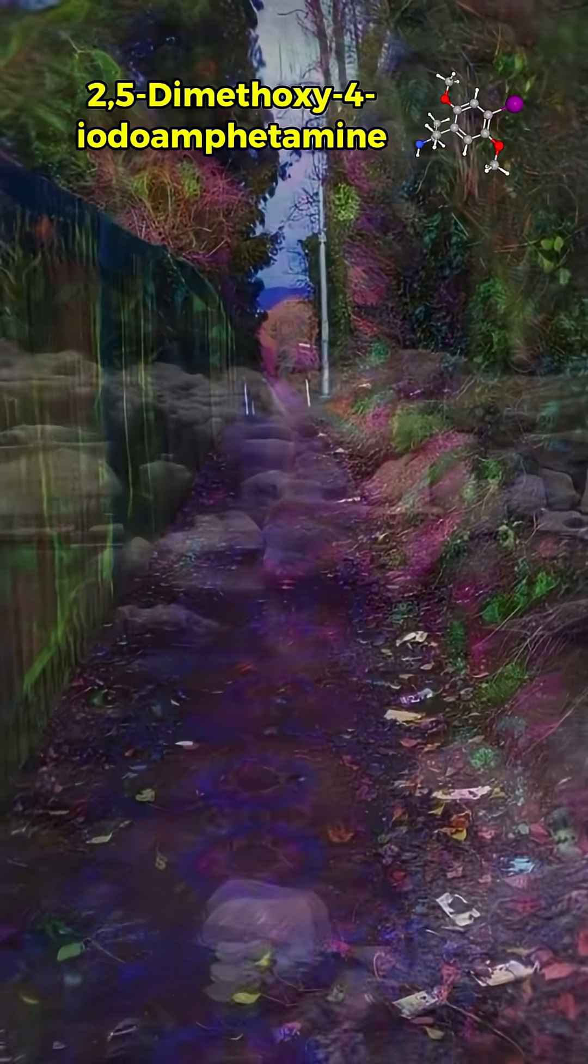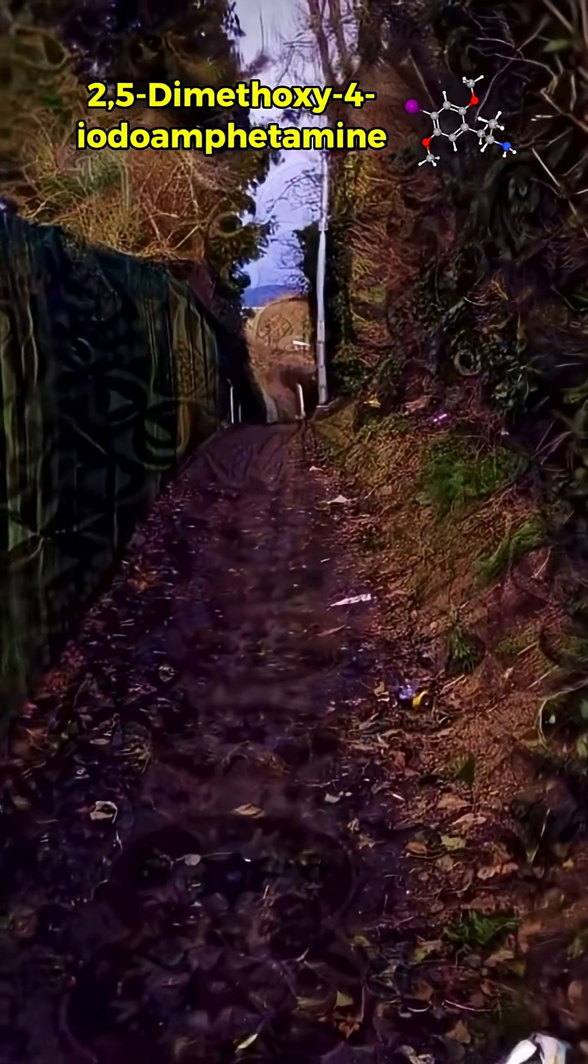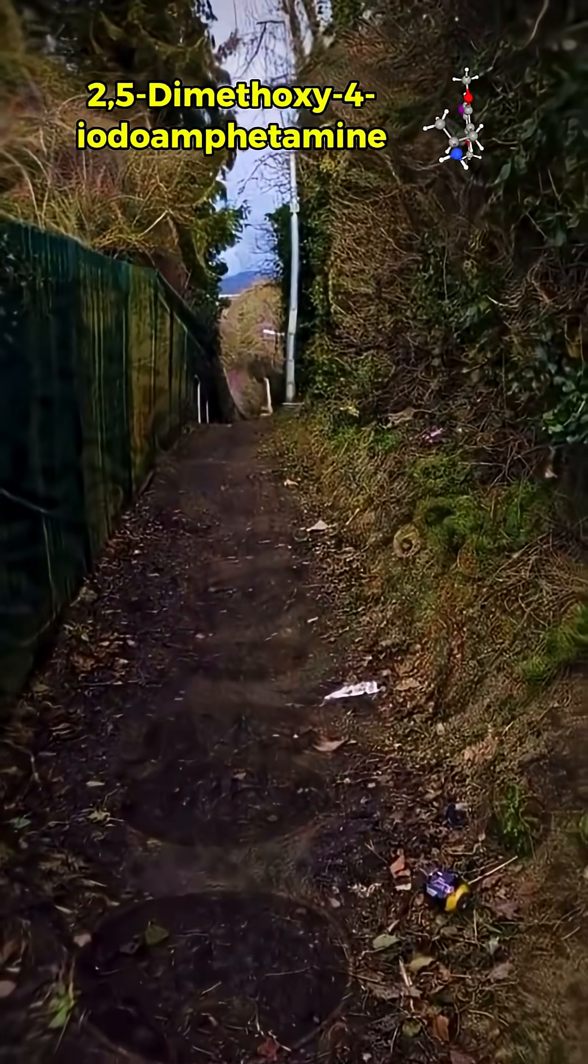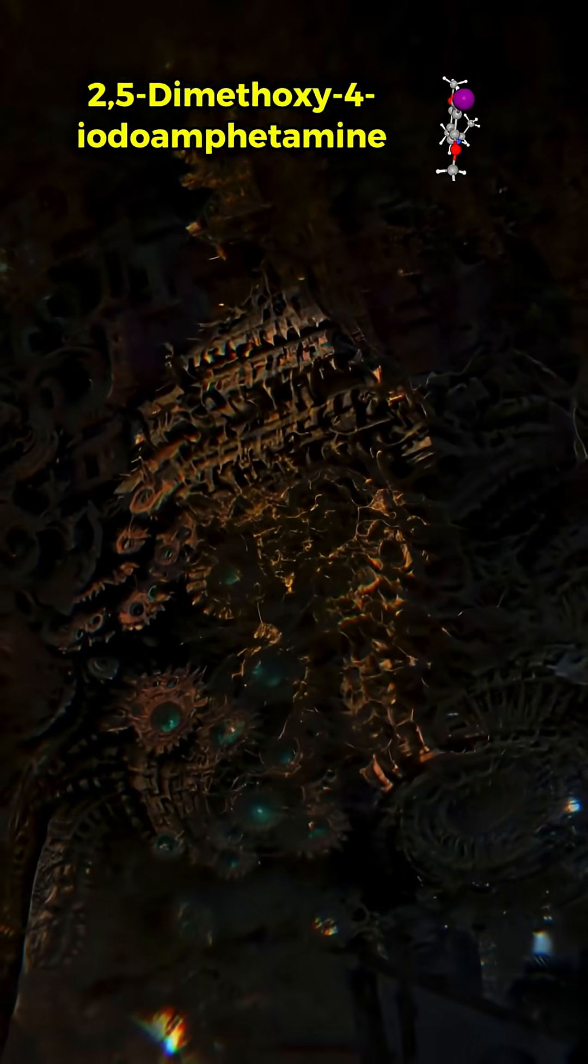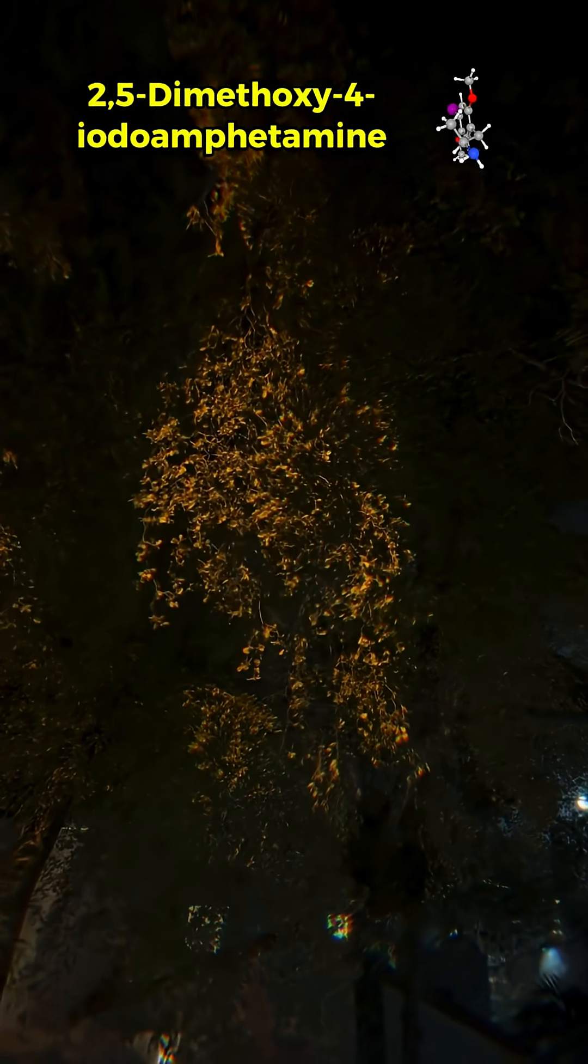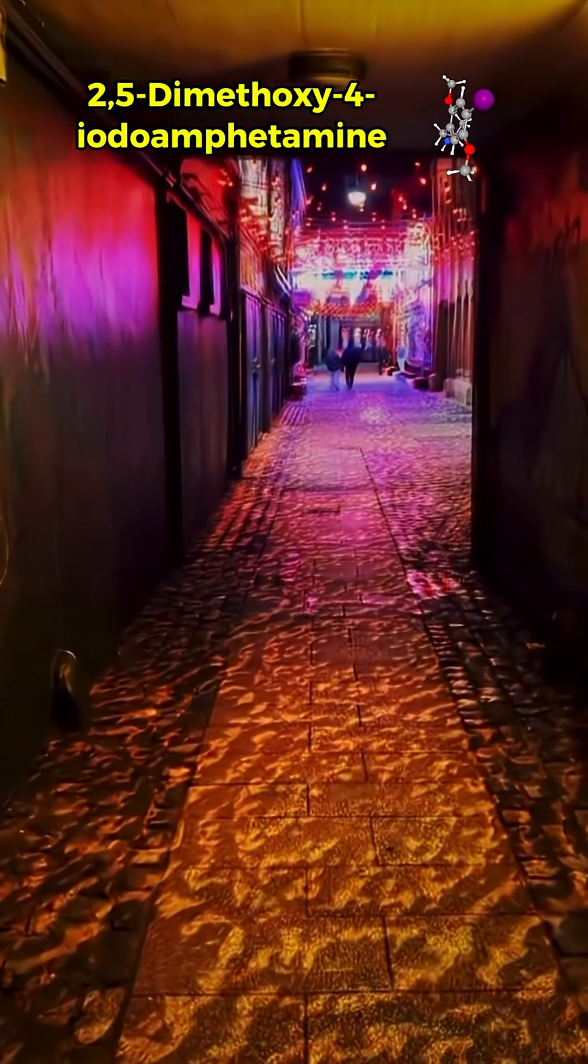Open eye visuals can be both vivid and overwhelming. Users often report intense color enhancement, with ordinary environments becoming saturated in luminous neon colors. Surfaces may ripple or pulse rhythmically, while objects appear to breathe or melt into their surroundings. Geometric overlays can project onto walls and textures, giving the world a surreal, animated quality.